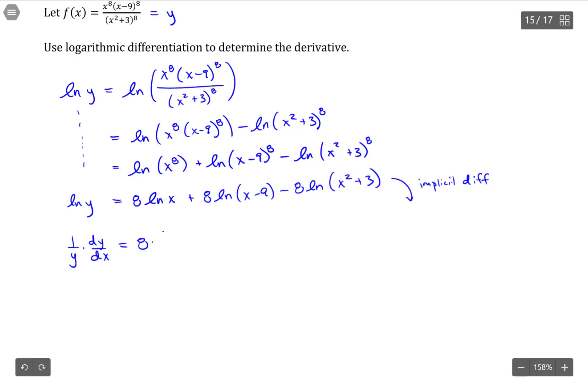Next up, natural log of x is just 1 over x for the derivative. x minus 9 is just 1 over x minus 9 for its derivative. And, x squared plus 3 is just 2x over x squared plus 3 for that derivative.